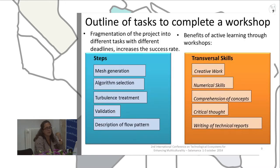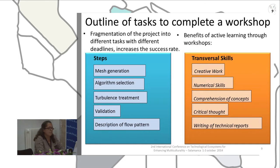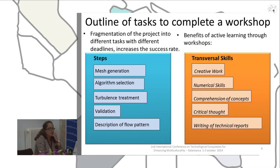At the beginning, the workshop was one complete task resulting in one report, but we found that students tended to spend too much time on the first and second tasks and very little time on the last one. Splitting the project into tasks has improved the accomplishment significantly. The first step is mesh generation, which involves creative work and independent decisions — there are no fixed rules, but students know some tendencies to improve the model and they develop their own mesh.